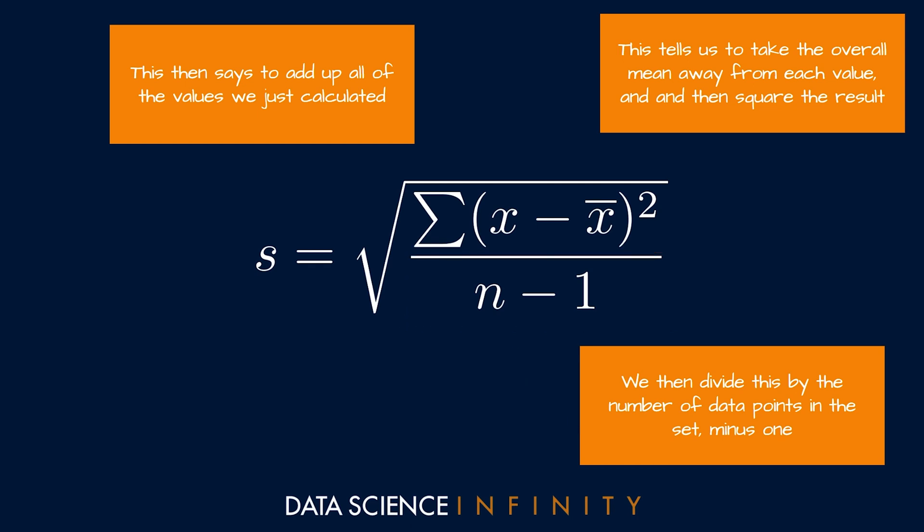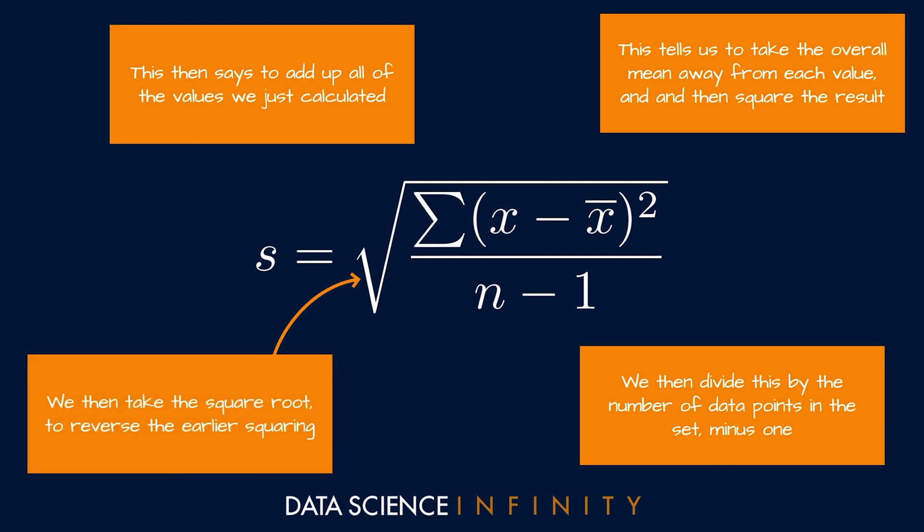Anyway, after we have our average deviation per value, we then take the square root of that to reverse the squaring that we did earlier. We needed to do this squaring initially in order to ensure all deviation values were positive, but this also results in the deviation values being very large. Taking the square root means that we bring the deviation values back to being based on true deviation distance from the mean.